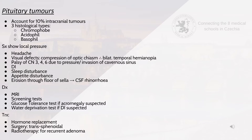For prolactinoma, the first-line treatment is a dopamine agonist. Preoperatively, hydrocortisone 100mg IV or IM is given. Subsequent cortisol replacement and reassessment vary with local protocols. Post-operatively, pituitary function needs to be retested and replacement needs assessed, with dynamic tests for adrenal function repeated at least six weeks post-operatively.